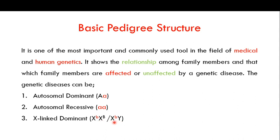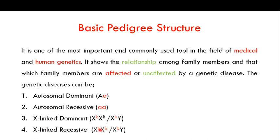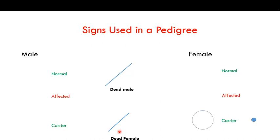For X-linked recessive, the concept is very similar to autosomal recessive. The only difference is that here the gene is present on the X chromosome rather than the non-sex chromosome. Both copies of the pair must be in their abnormal form. In males, since they have only one X chromosome, the single member present would be the abnormal allele, so they would express the disorder.